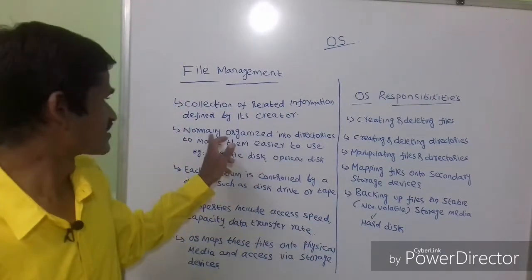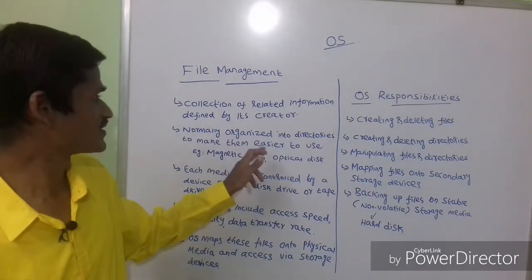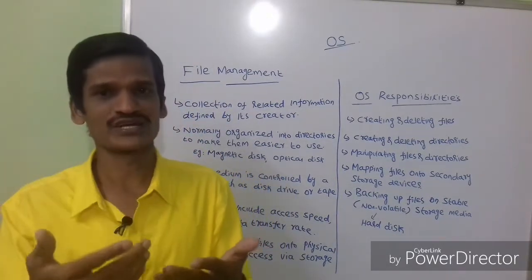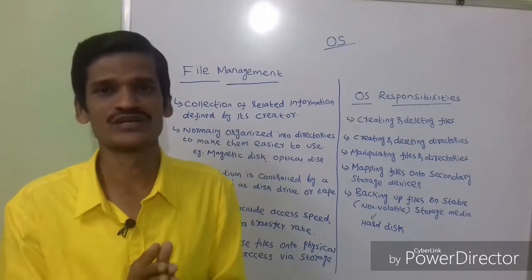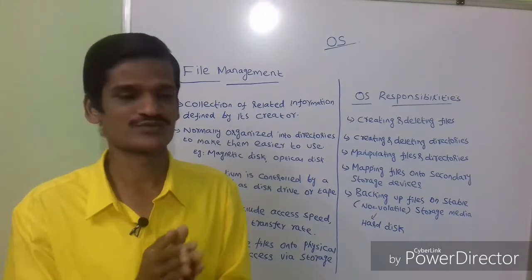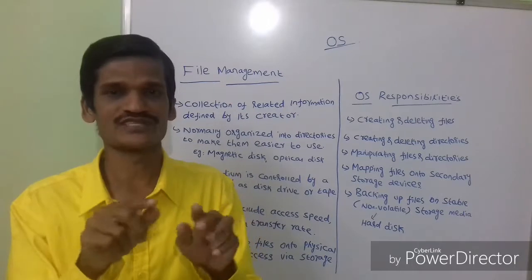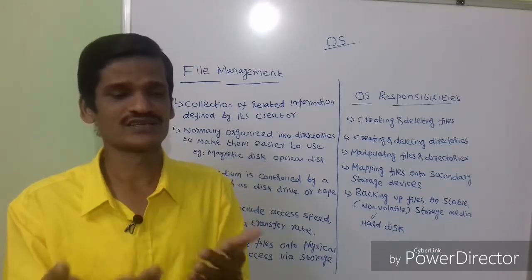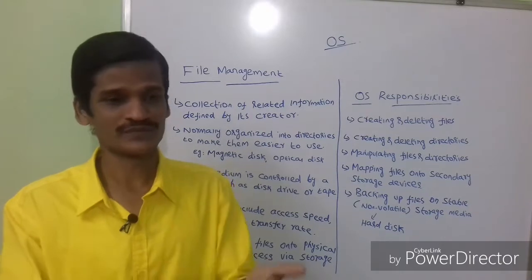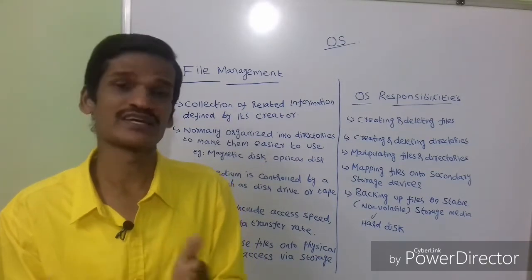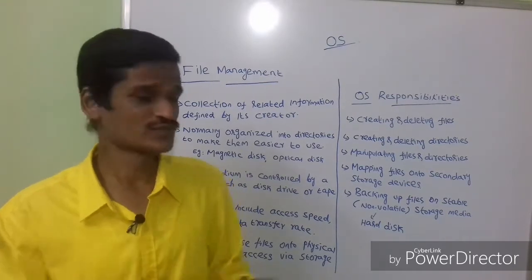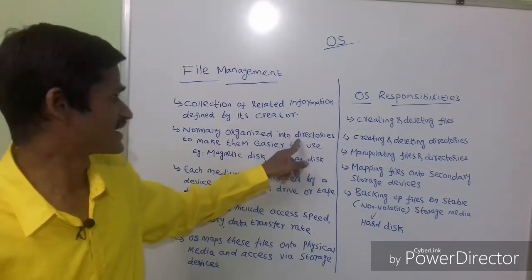Files are normally organized into directories to make them easier to use. You can create one directory, and below that directory you can create a sub-directory — that means a folder. For example, taking the same example, student information file is one of the folders. Then I can create one more folder — a sub-folder — and in that sub-folder I can store the student information file.